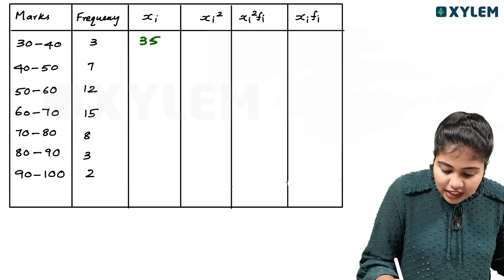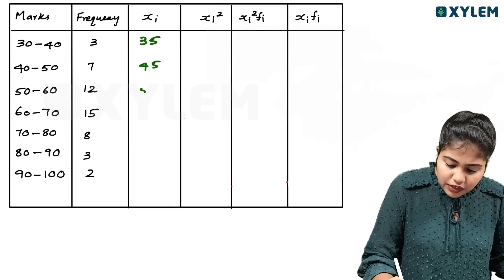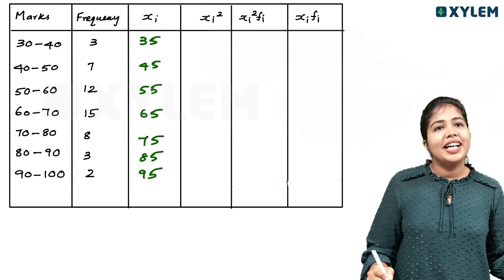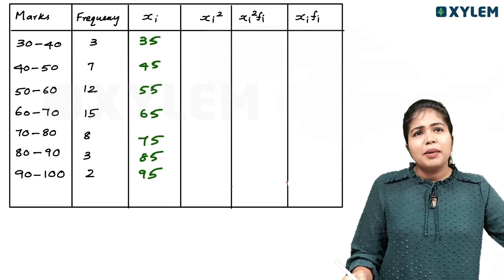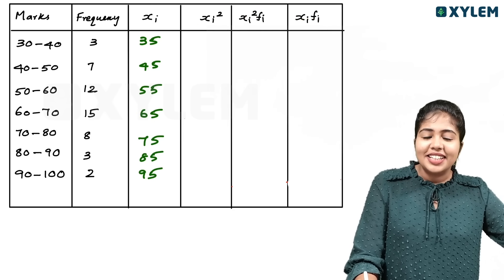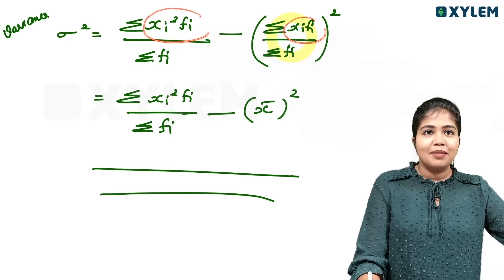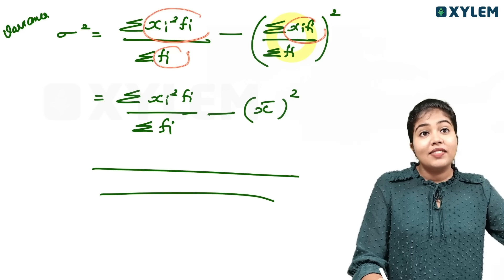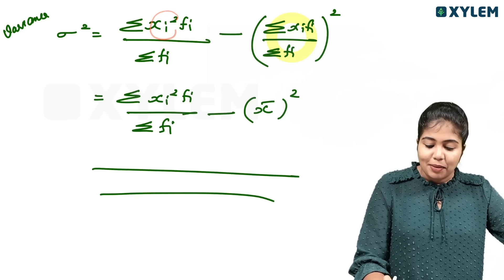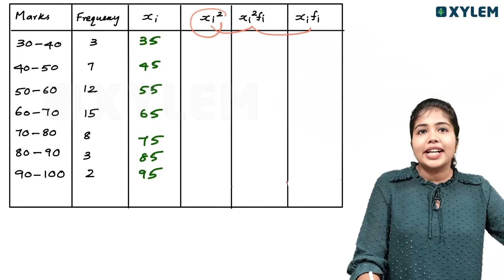If you use xi = 35, the mid value for the next interval is 45. Then 55, 65, 75, 85, and 95. The xi column gives the mid values. For the table, you need: first column is class, second column is frequency, third is xi, fourth is xi squared, fifth is xi squared fi, sixth is xi fi.